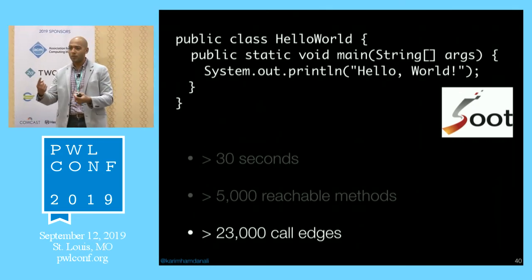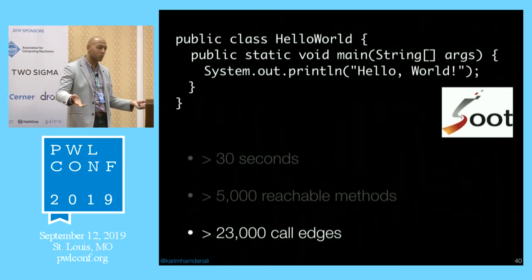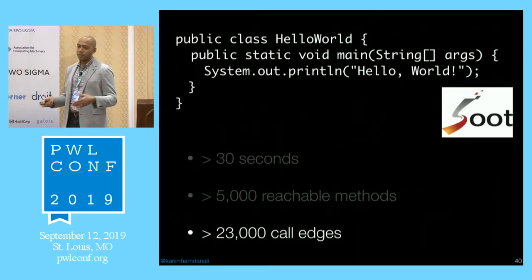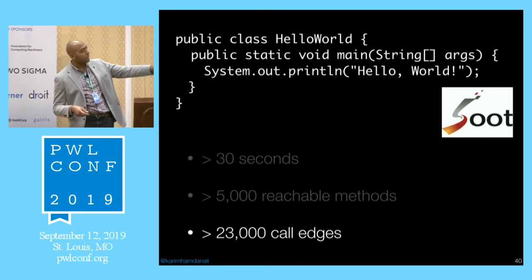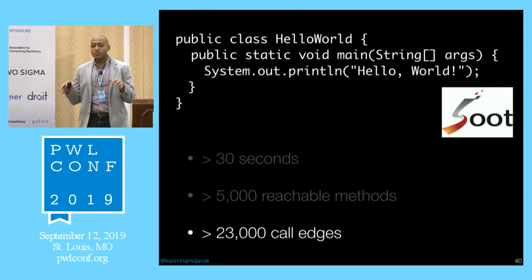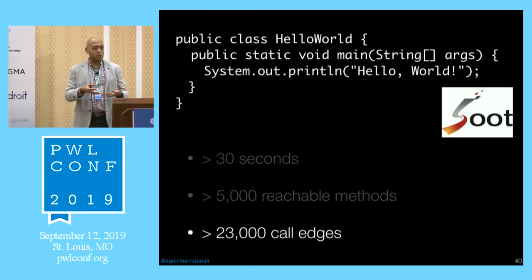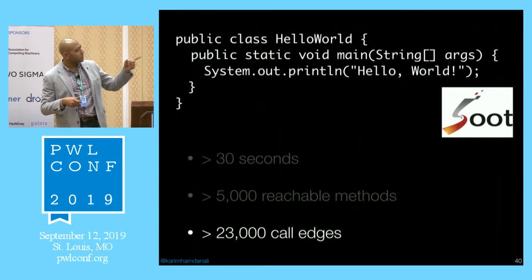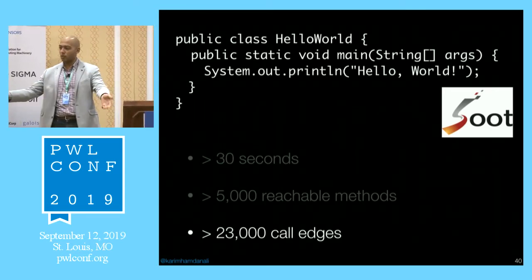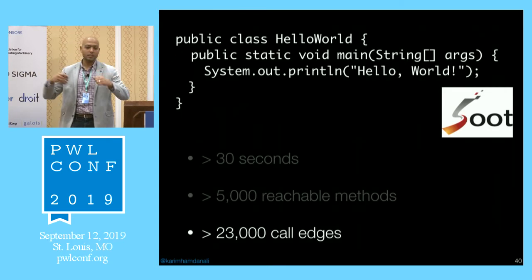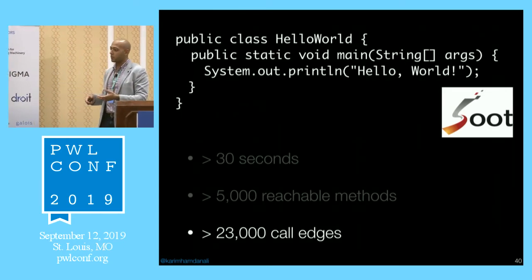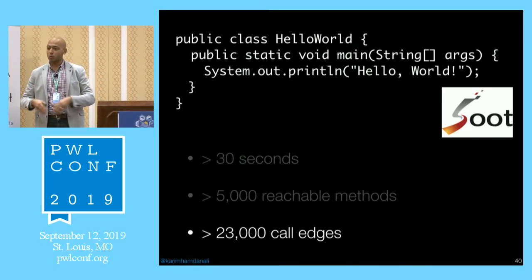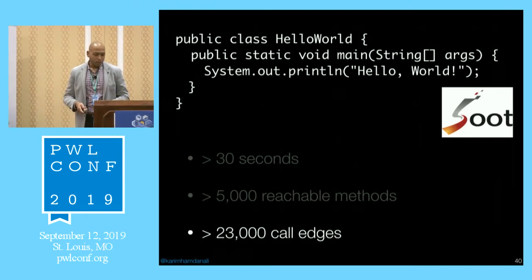Looking at that Hello World code, I expected maybe two or three edges. Reading more papers, I realized that for the analysis to analyze your program, it has to bring in all the library dependencies your code depends on. Since you're calling System.out.println, it brings in all the relevant parts of the standard library to run the analysis properly. So it's not just the code you wrote — it's also all library dependencies.